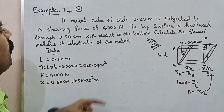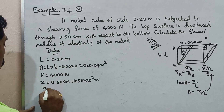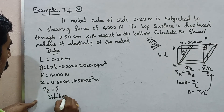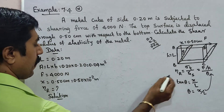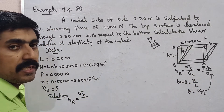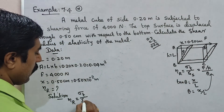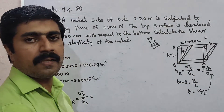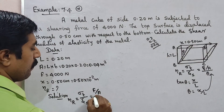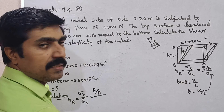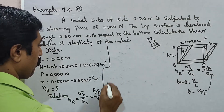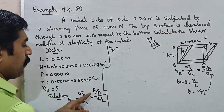Next, shear modulus eta-r. The solution is: shear modulus eta-r equals tangential stress sigma-t divided by shearing strain psi. Tangential stress equals force divided by area, i.e., F divided by A. Shearing angle theta equals x divided by L.